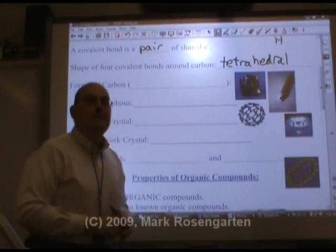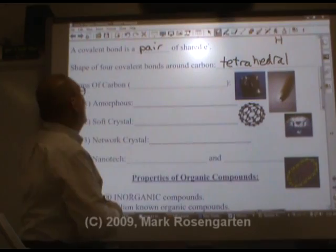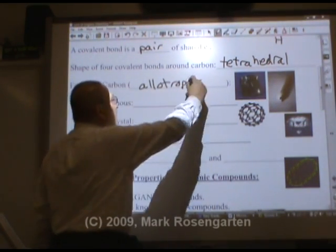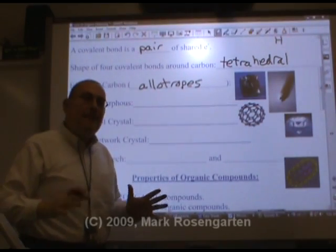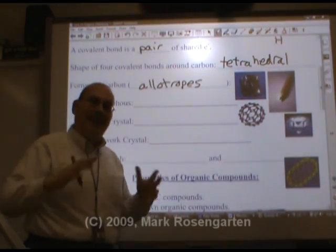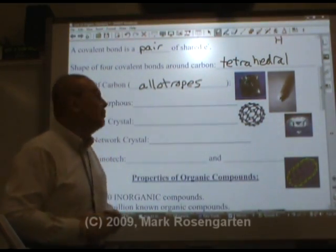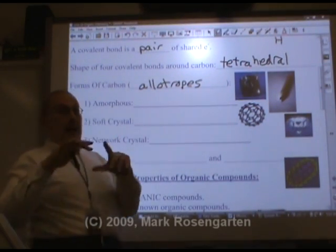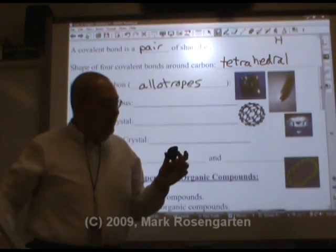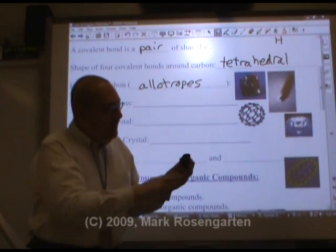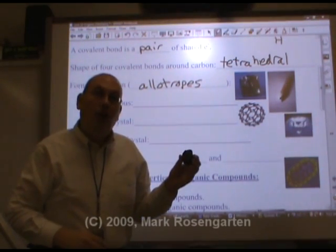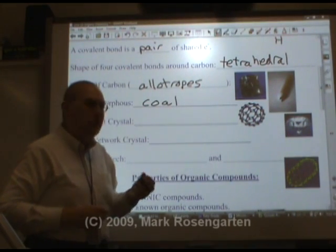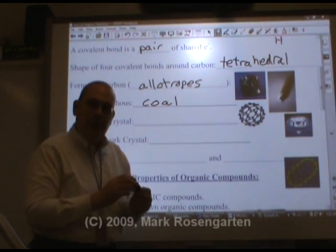Carbon comes in many different forms and they're called allotropes. They're all pure carbon, but their molecular arrangement is different, and this gives them different properties. Amorphous means without a definite crystal shape — like this right here. This is coal. Coal is amorphous carbon.